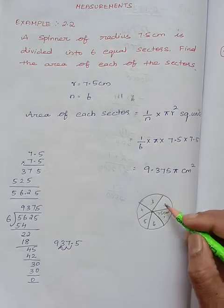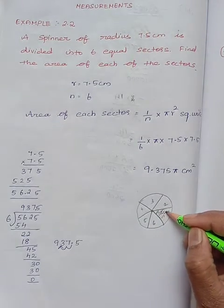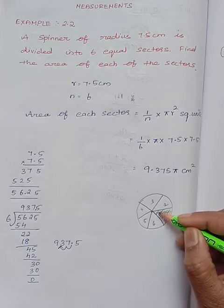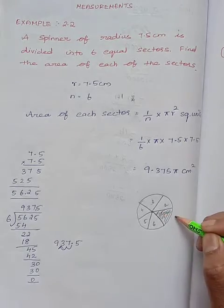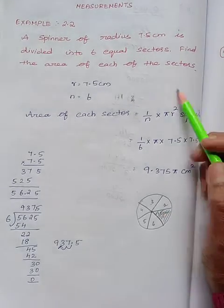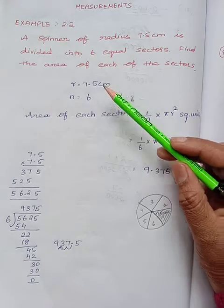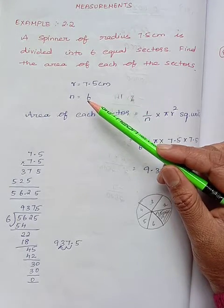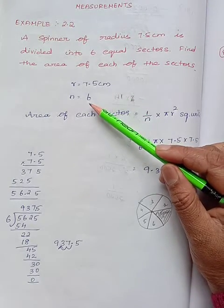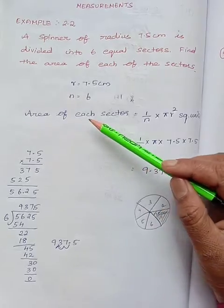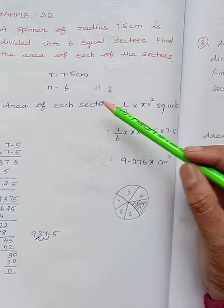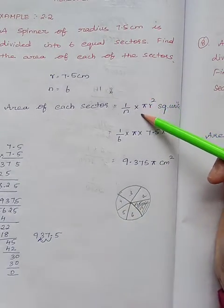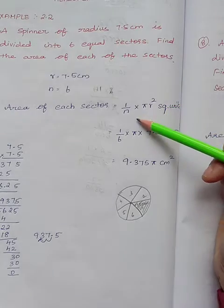Now we should find the area of each sector — how much big it is. We have to find the area of one sector. The radius is given as 7.5 cm and they are divided into 6 equal parts. The area of each sector is 1 by n into area.